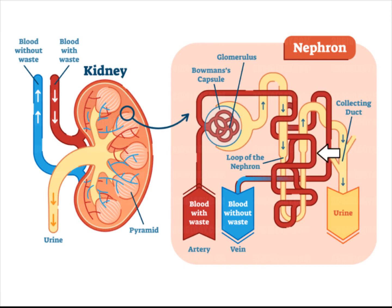Thin-wall capillaries run the entire length of the nephron, bringing in blood with metabolic waste. The renal artery, a branch of the aorta, brings unfiltered blood into the kidney. Filtered blood then leaves via the renal vein.